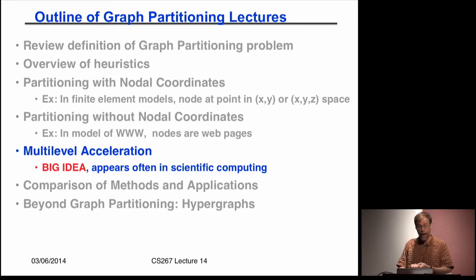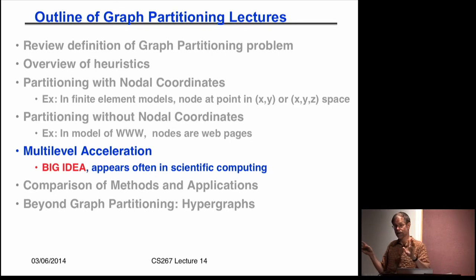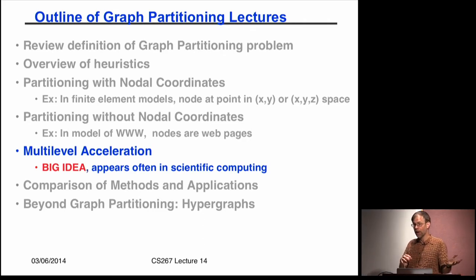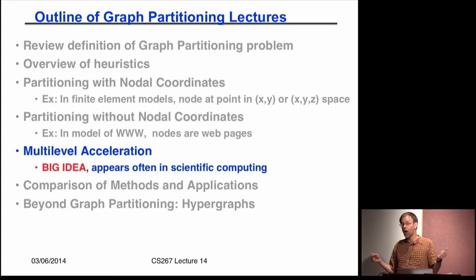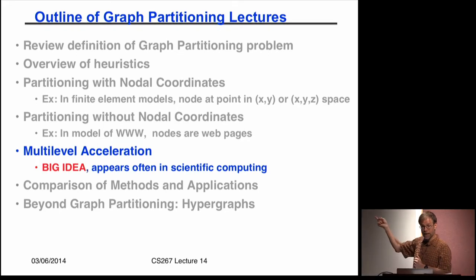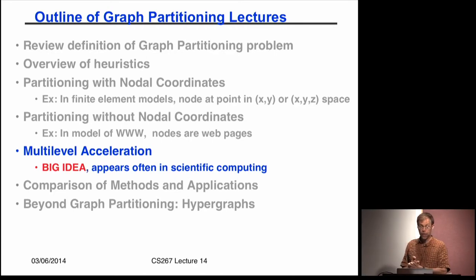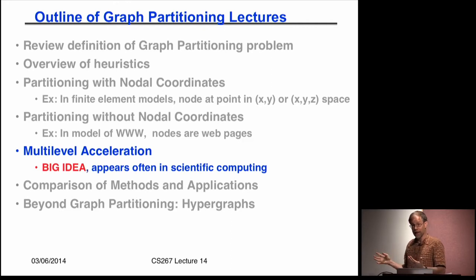There are two categories of heuristics. One is where you have XY or XYZ coordinates for the vertices — inertial partitioning or random circles/spheres — and you use those coordinates while ignoring edges. The other handles graphs where you only have edges, like the World Wide Web. Two algorithms work there: Kernighan-Lin and spectral. Both are fast in principle, but not fast enough. That's why the next category — multi-level acceleration — takes either of those two and makes them much, much faster. This is a big idea that also appears in the fast multipole method and multigrid solvers.